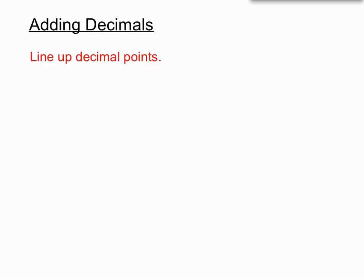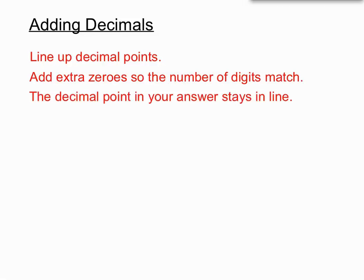Okay, adding decimals. We line up the decimal points. We can add extra zeros so that the number of digits match. And the decimal point in our answer stays in line with the decimal points in our question.